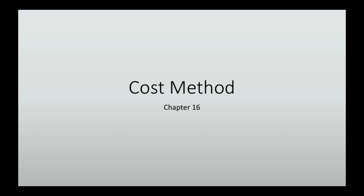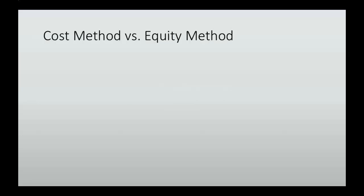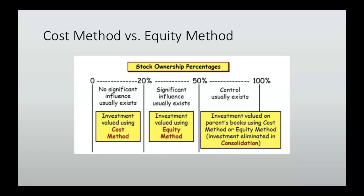Let's look over the cost method from chapter 16. When dealing with stock investments, you have to decide whether you're working under the cost method or the equity method. We figure that out based on the ownership you have in another company. If you have between 0 and 20% ownership, we use the cost method. If you have between 20 and 50%, we use the equity method.